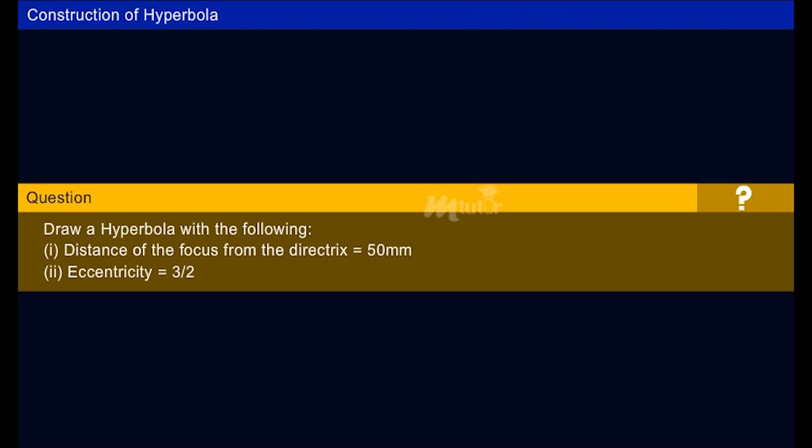Construction of hyperbola by eccentricity method can be learned by this problem. Draw a hyperbola with the following: Distance of the focus from the directrix equal to 50mm. Eccentricity equal to 3/2.